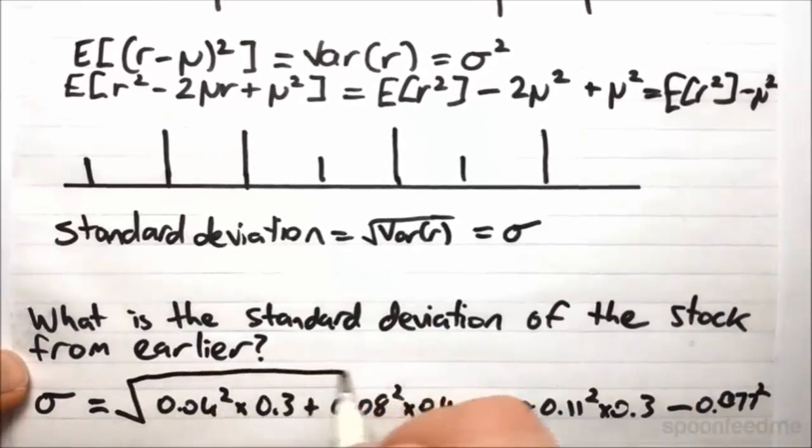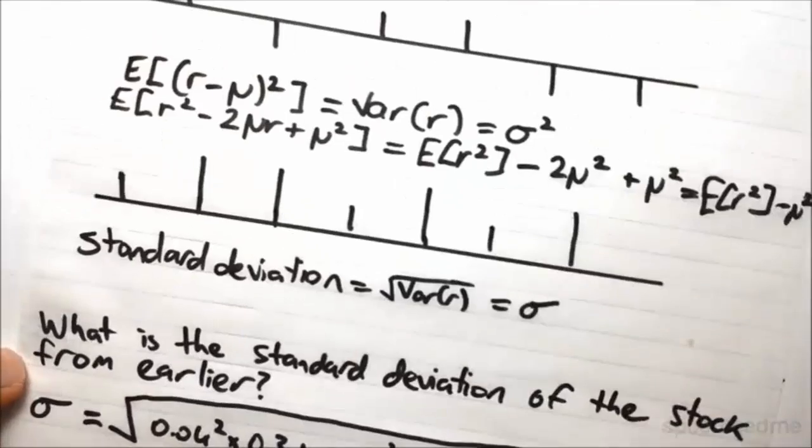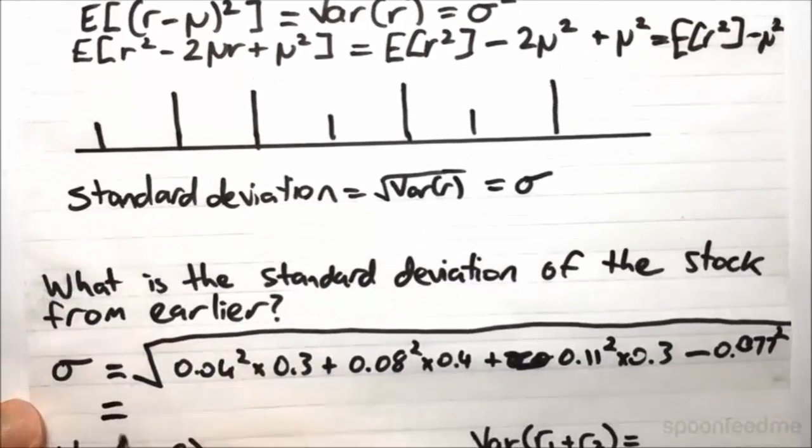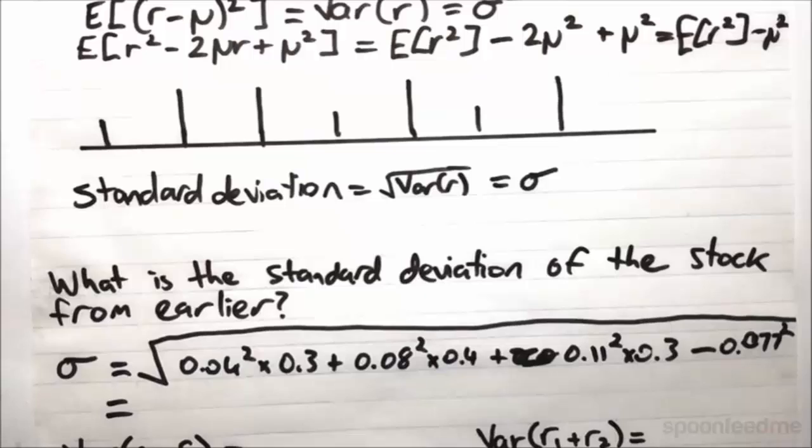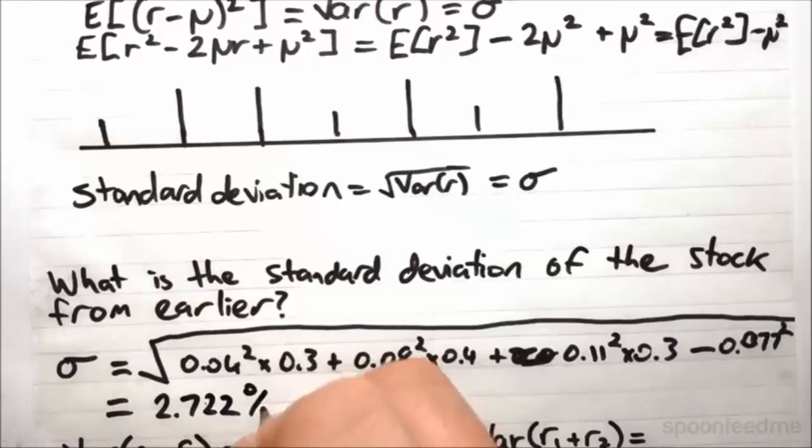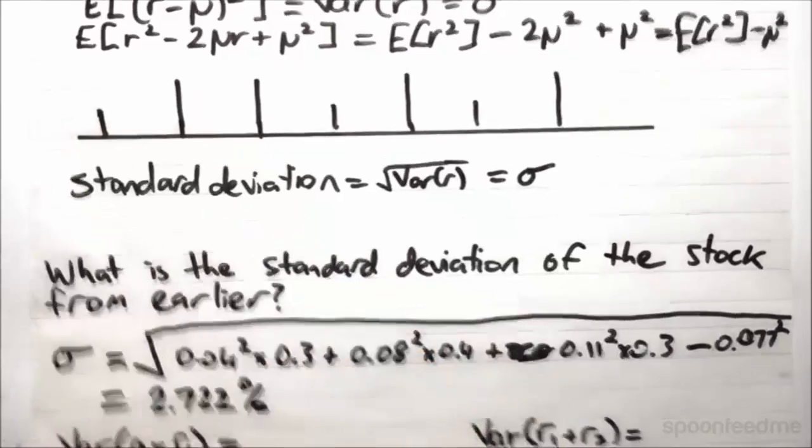And we take the square root of that whole thing. And that comes out to be 2.722%. Nice and simple.